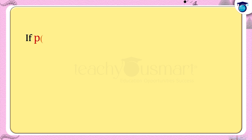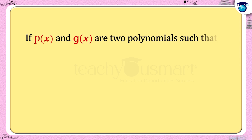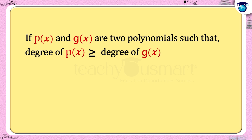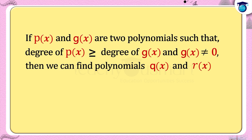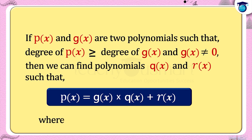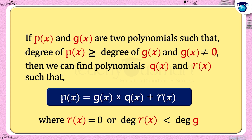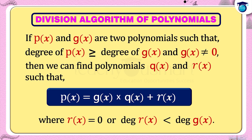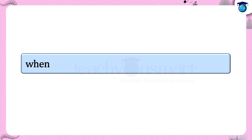In general, if p(x) and g(x) are two polynomials such that degree of p(x) ≥ degree of g(x) and g(x) ≠ 0, then we can find polynomials q(x) and r(x) such that p(x) = g(x) × q(x) + r(x), where r(x) is either 0 or degree of r(x) < degree of g(x). This is the division algorithm of polynomials. When r(x) = 0, that is when the remainder is 0, then g(x) is a factor of p(x).